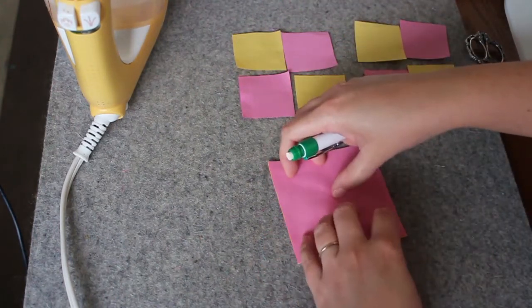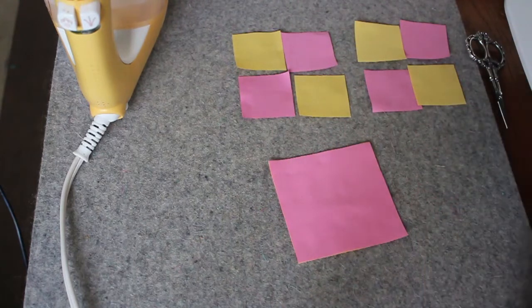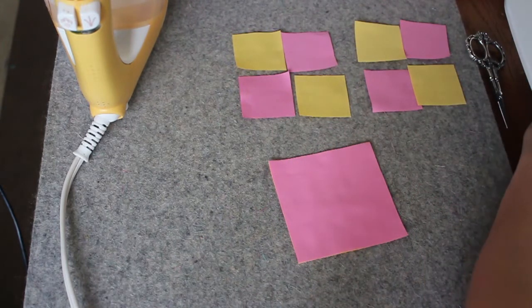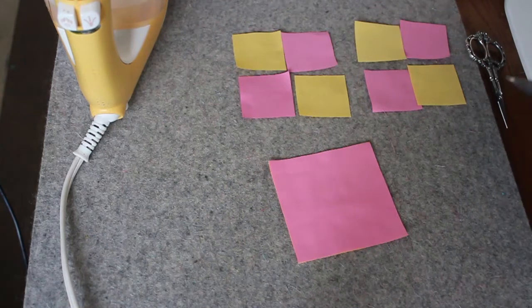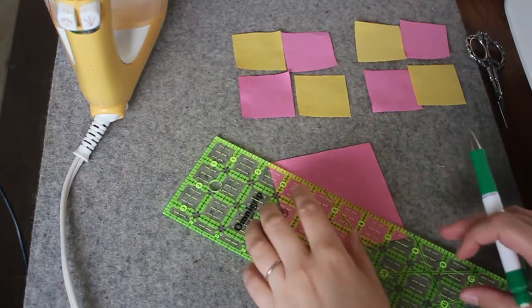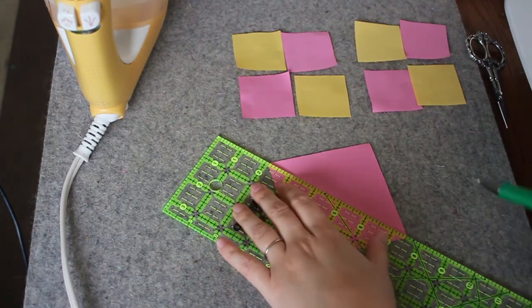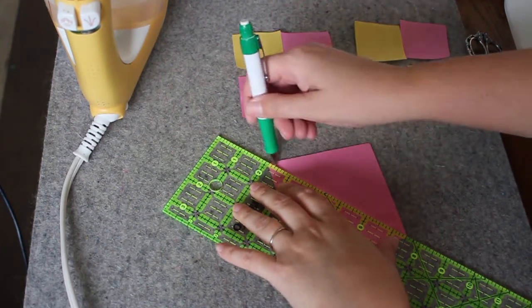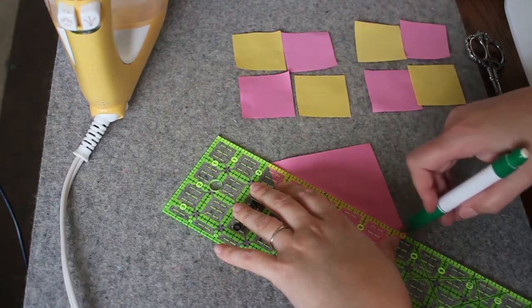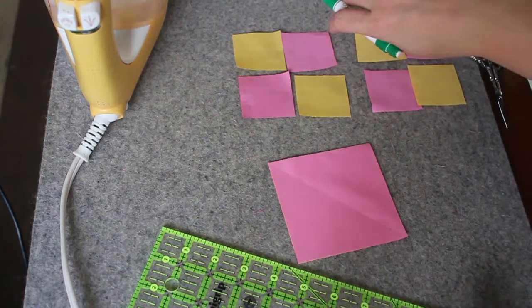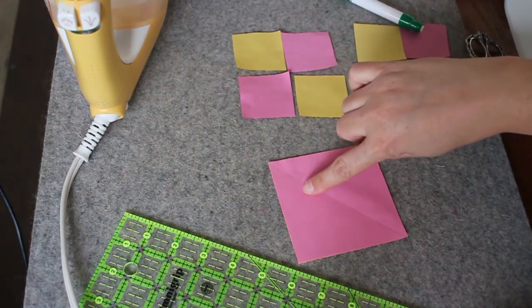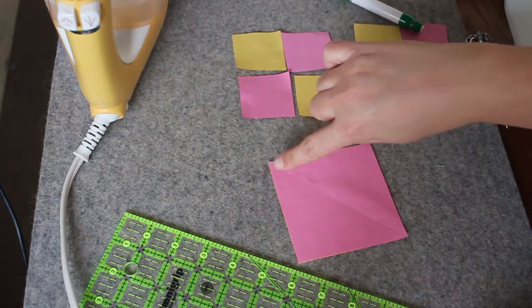To make the half square triangle unit we're going to draw a line down on the diagonal with our chalk marker, our chalk pencil. There we go. And we're going to stitch a quarter of an inch over on each side and then cut it in half.